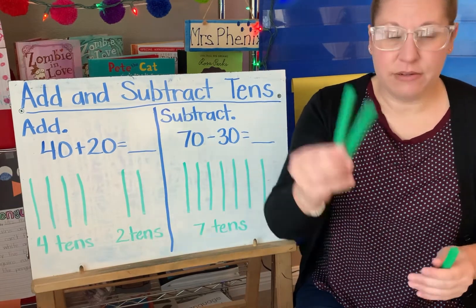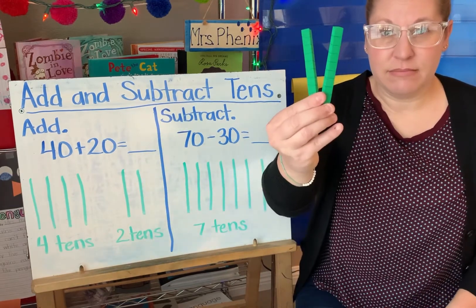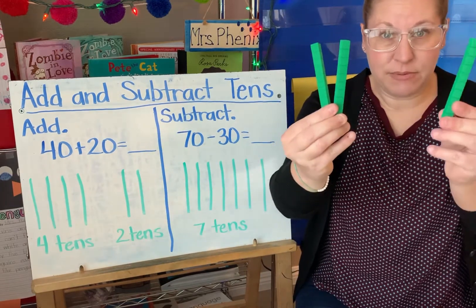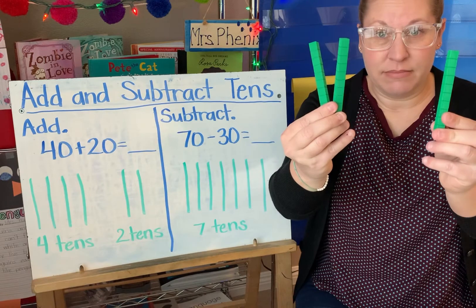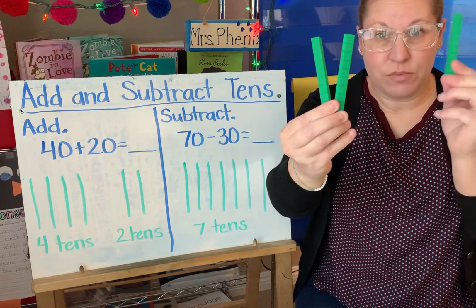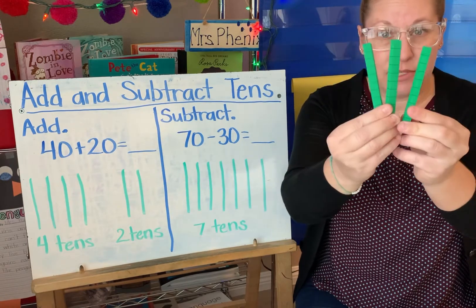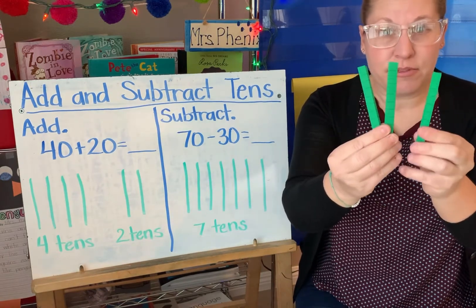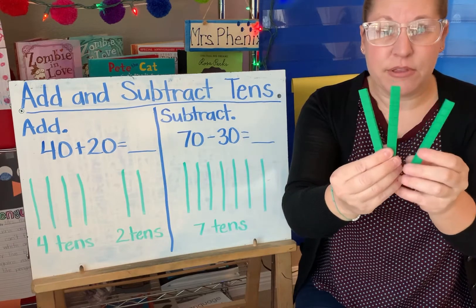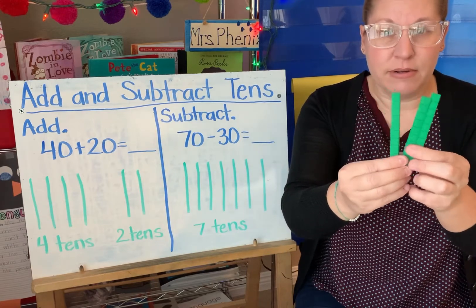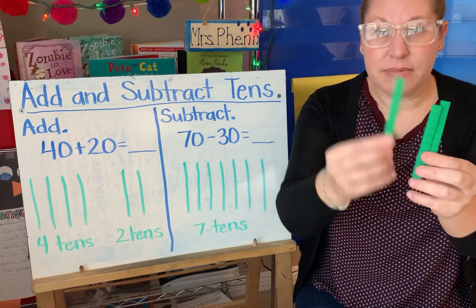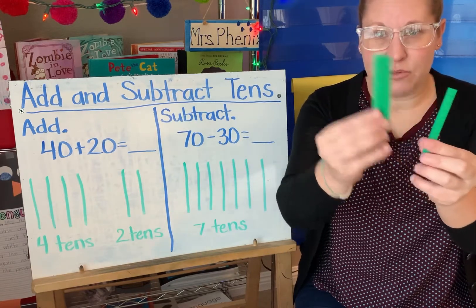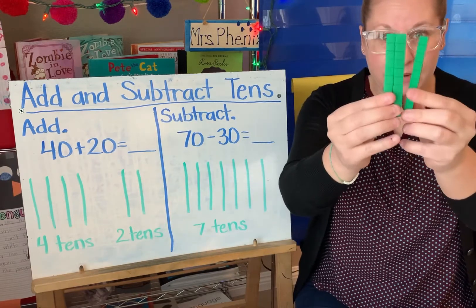I want to add two 10s plus one 10. Two plus one equals three. So I have three 10s and I know that three 10s equals 30. 10, 20, 30.